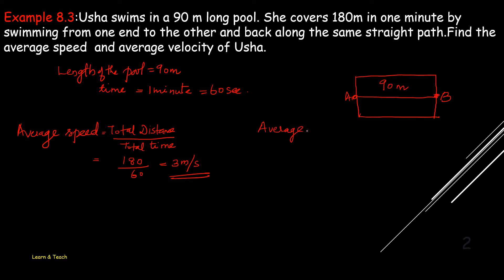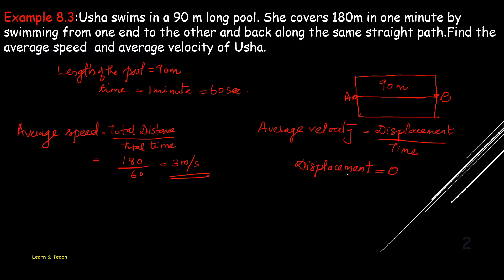Next is average velocity. Average velocity equals displacement divided by time taken. In this case, Usha comes back to A — the initial position — so the displacement is equal to 0. Therefore, average velocity equals 0 divided by 60, which is 0 meters per second.